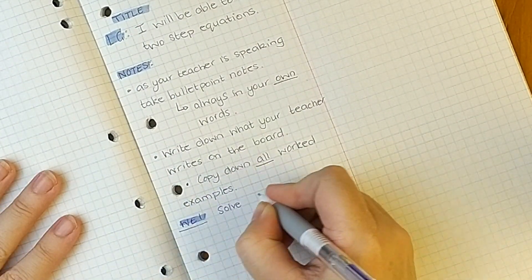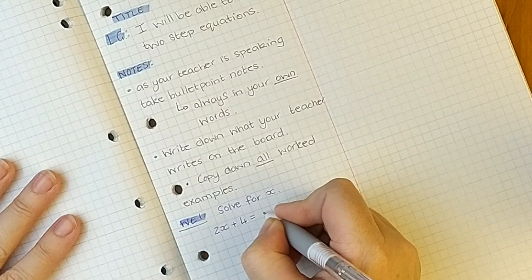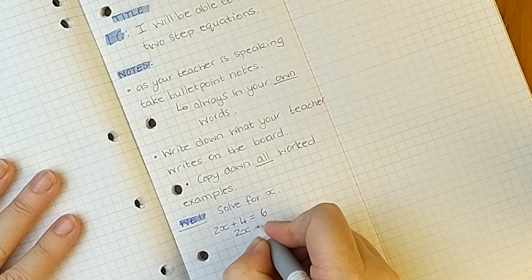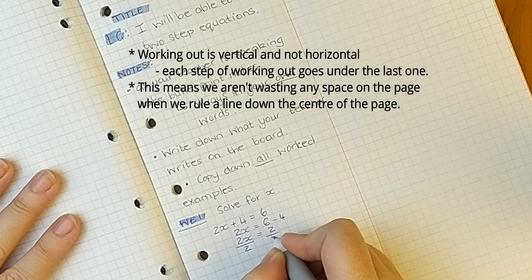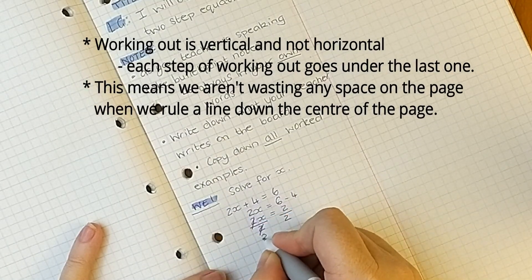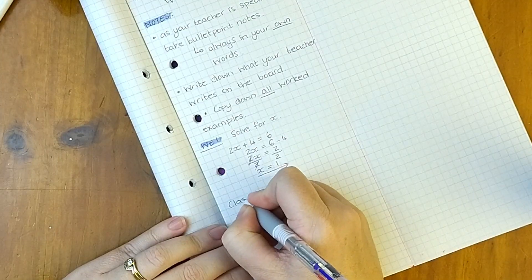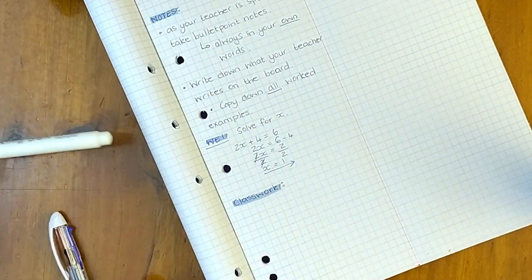This is where you'll see why we've ruled down the page. So when we are working in maths for middle school we generally show all of our working out vertically. So as you can see here the equals is underneath each other for each step of working out. Underline your final answer so it's easy to find.